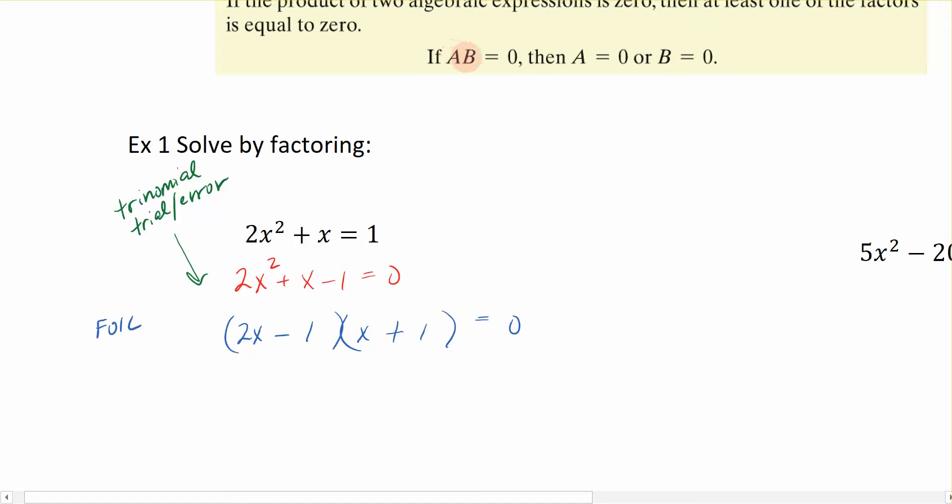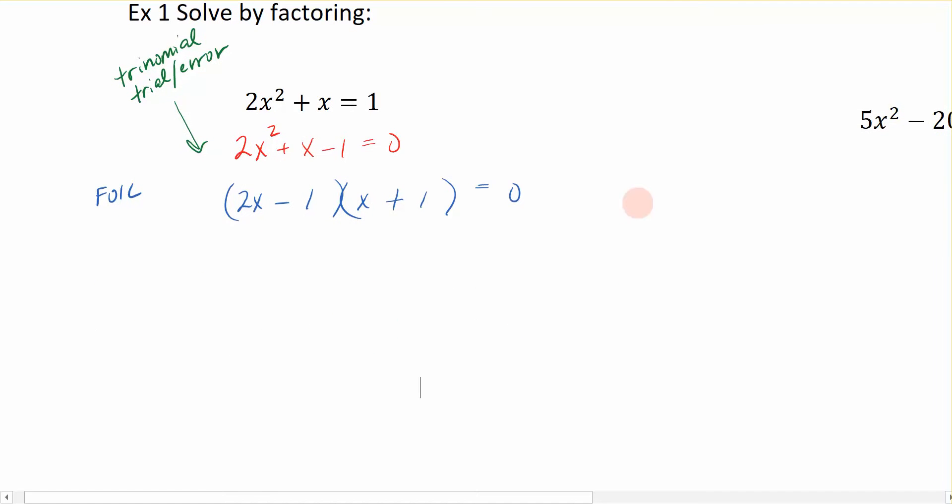Again, it said if I had two factors that were set equal to zero, then either of those factors or each of those factors are going to now be set equal to zero. So we take the first factor, 2x minus 1 equals zero, the second factor equal to zero, and we solve both of these equations. The left most equation is solved by adding 1 to the right hand side. 2x is equal to 1. Now we divide both sides by 2 and I find out that x is equal to 1 half.